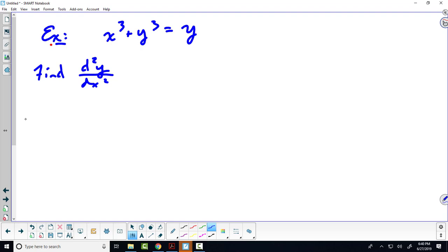Just as before, we're going to take d/dx of both sides. This gives us 3x squared plus 3y squared times y prime equals y prime.